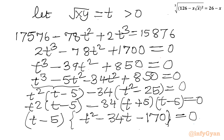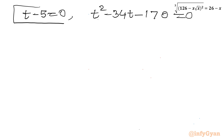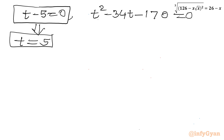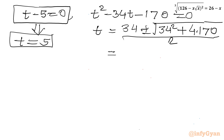From the factored form: either t - 5 = 0, giving t = 5, or t² - 34t - 170 = 0. Using the quadratic formula on the second equation: t = (34 ± √(34² + 4·170)) / 2, which gives t = 17 + 3√51 or t = 17 - 3√51.